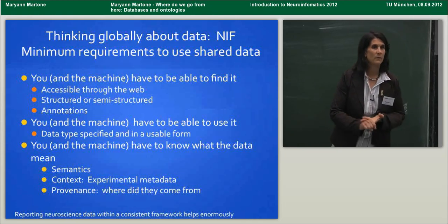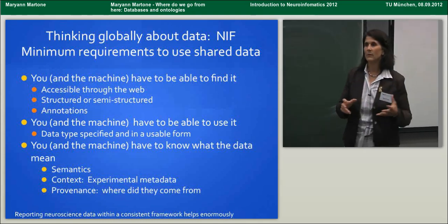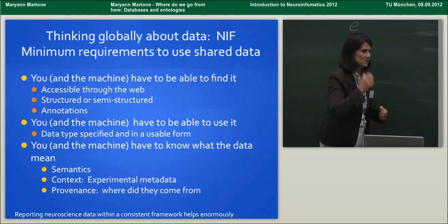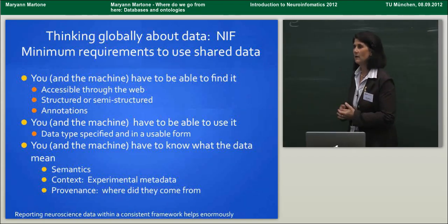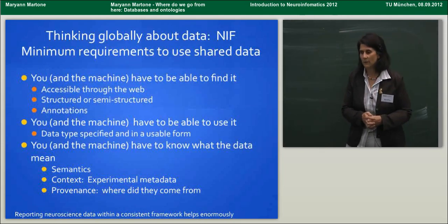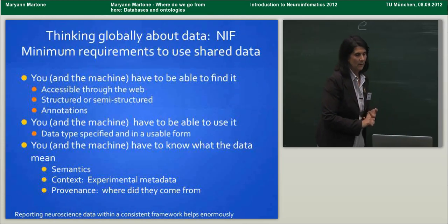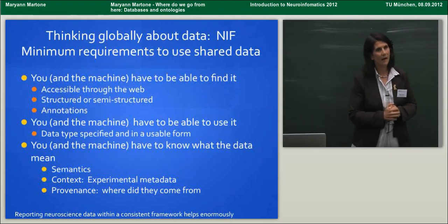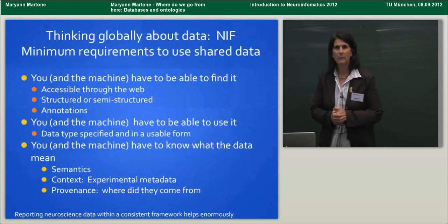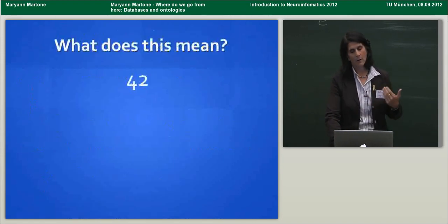Finally, and this is the bulk of my talk, you have to know what the data mean. There has to be some semantics about what it is you're actually looking at — some context, experimental metadata. To scientists, how you got your answer is more important than the answer itself. If you don't understand those, you will not trust it. And something about provenance — where did this thing come from? Being able to use an information framework makes all of this a lot easier to do.